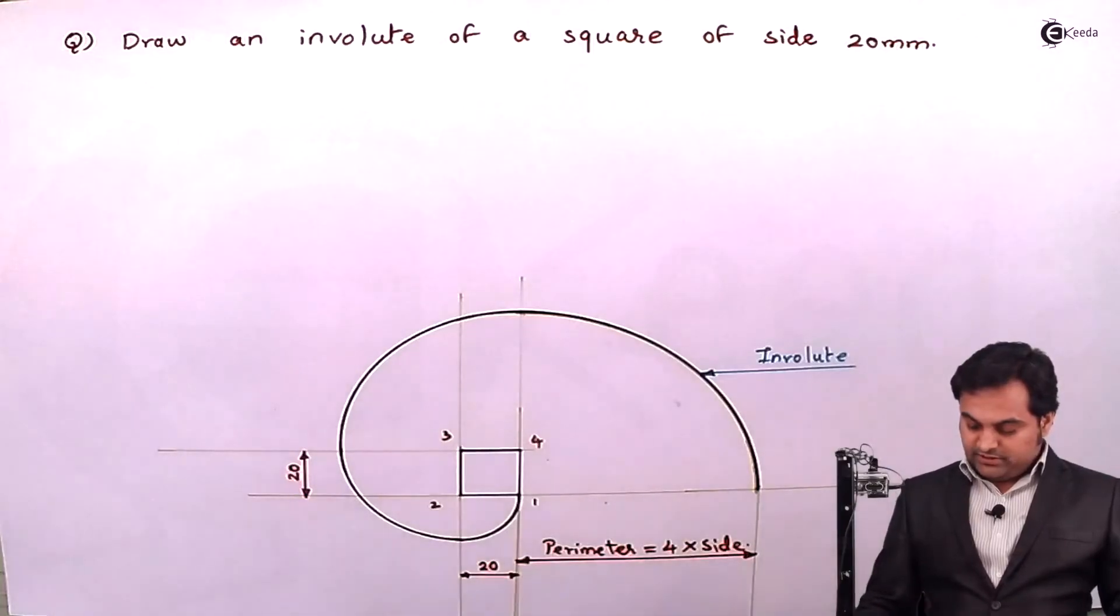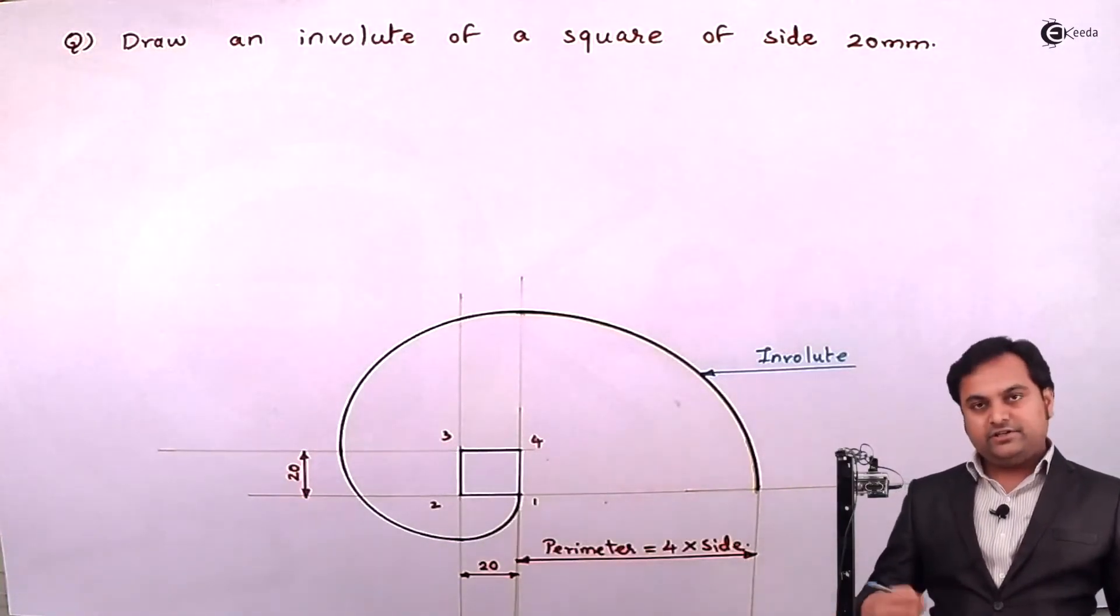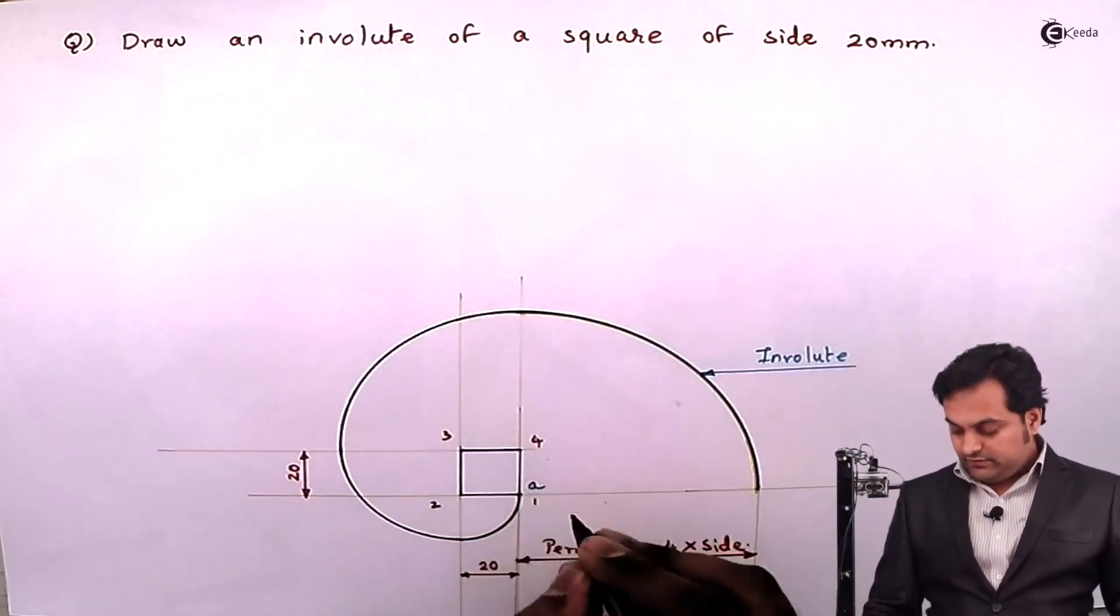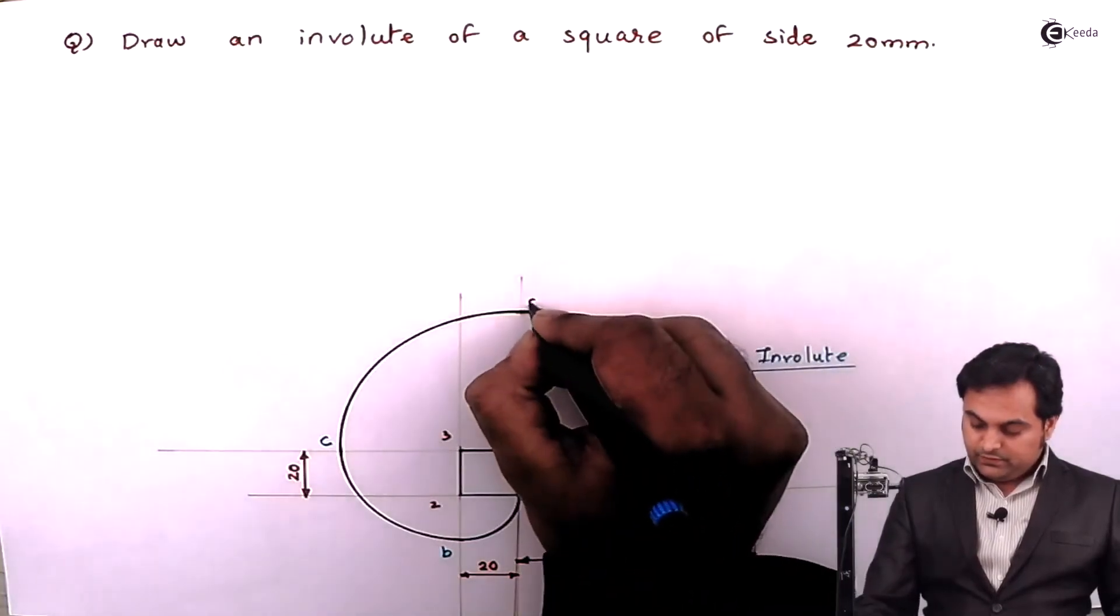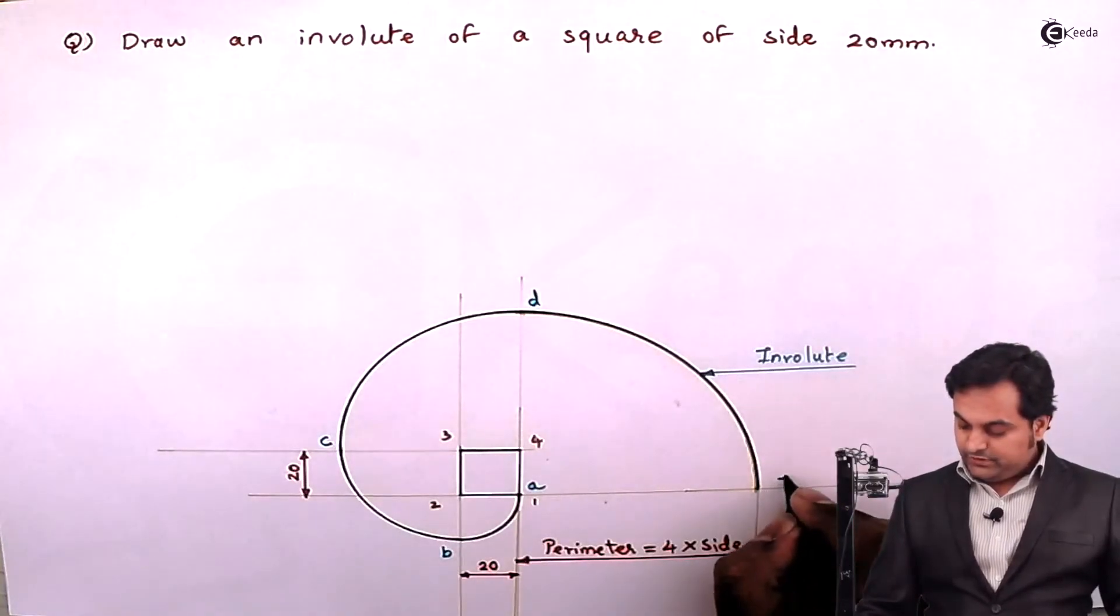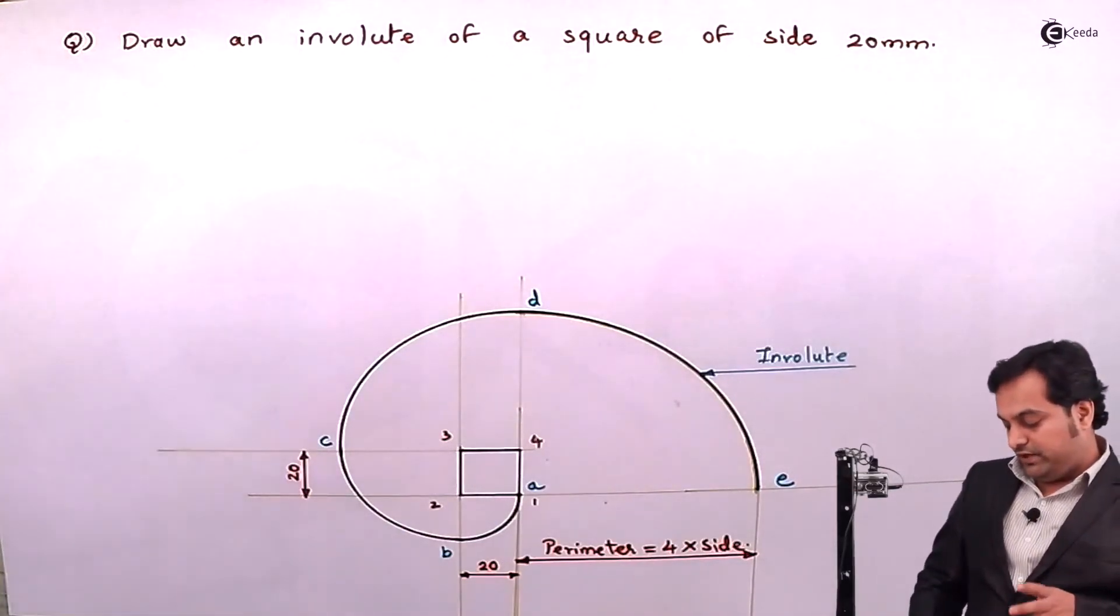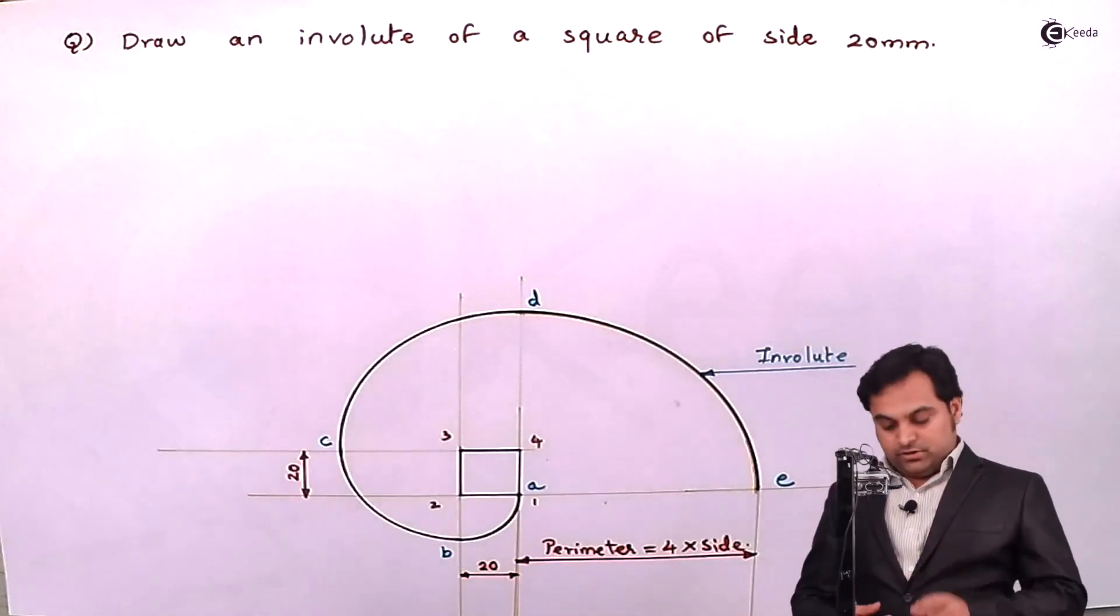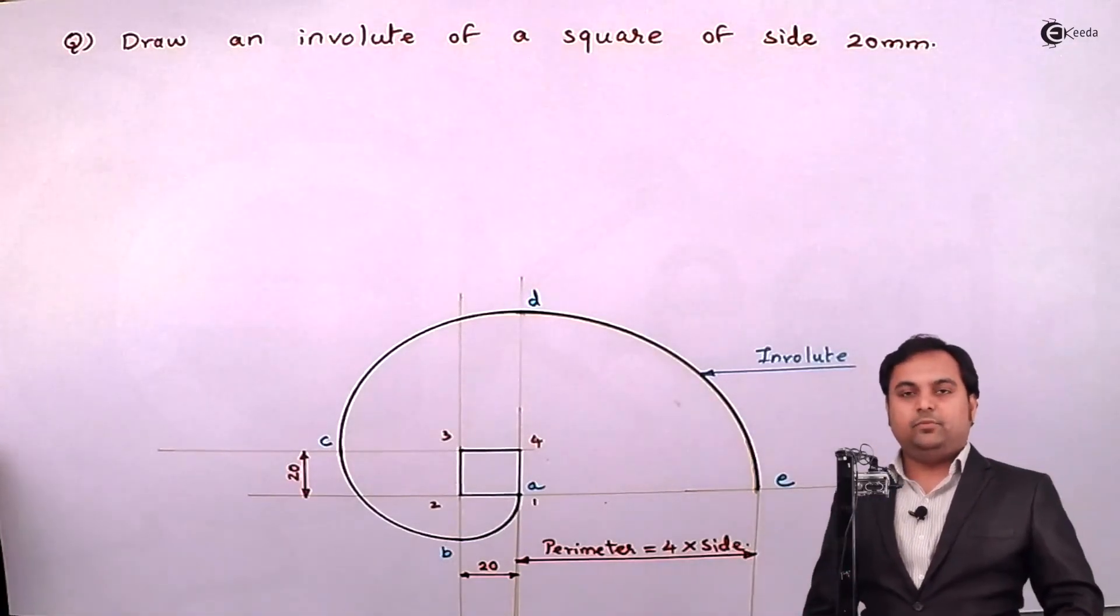And here over this also I can give the rotations. Like I'll say that where I had started unwinding, that will be point A. Here this is point B, C, D, and point E. So this is the involute we are getting when the string has been unwound from a square. With this we complete the problem.